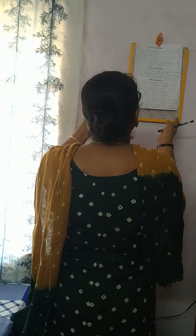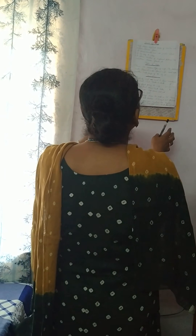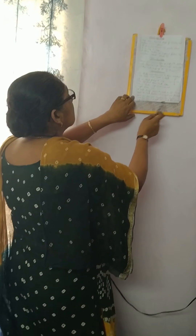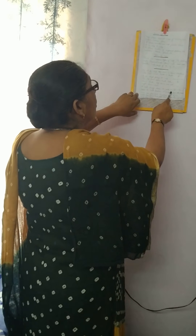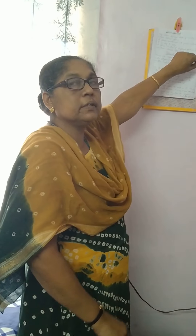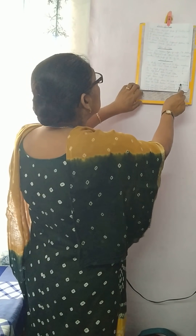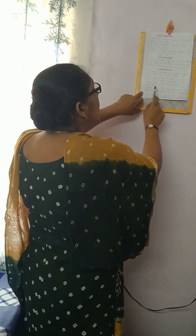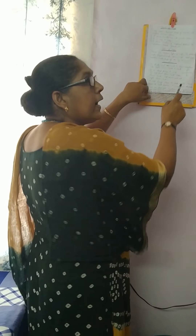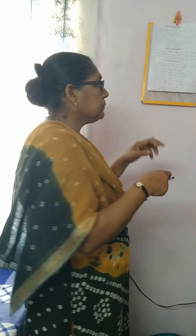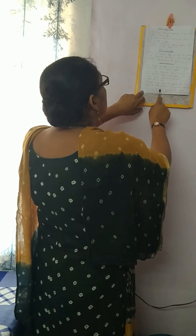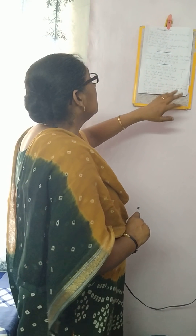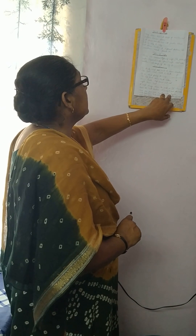The right side of the map shows East and the left side shows West. On a map, North is always marked at the top with the letter 'N' in big letters. Once we know the North direction, it is easy to find the other directions.